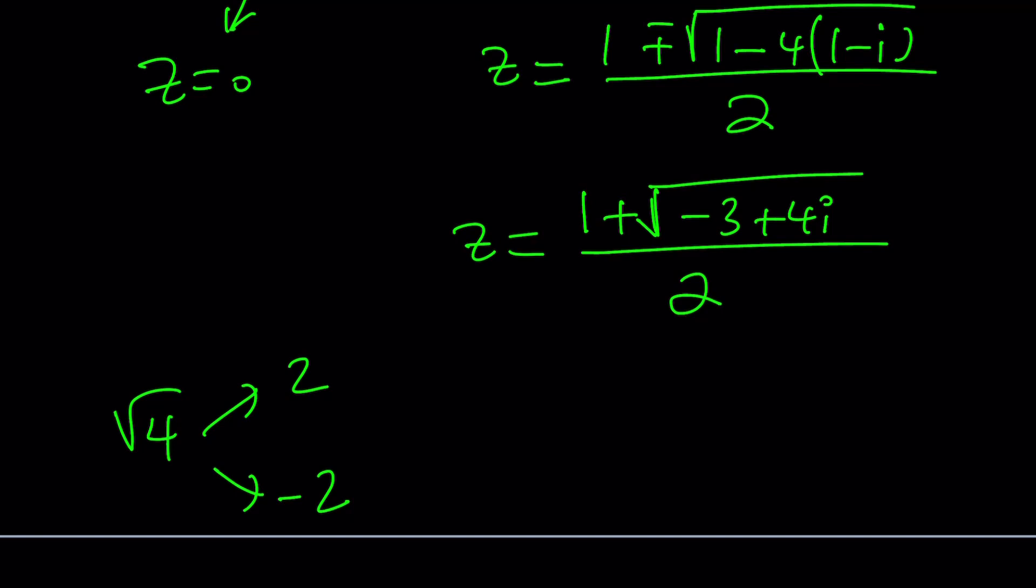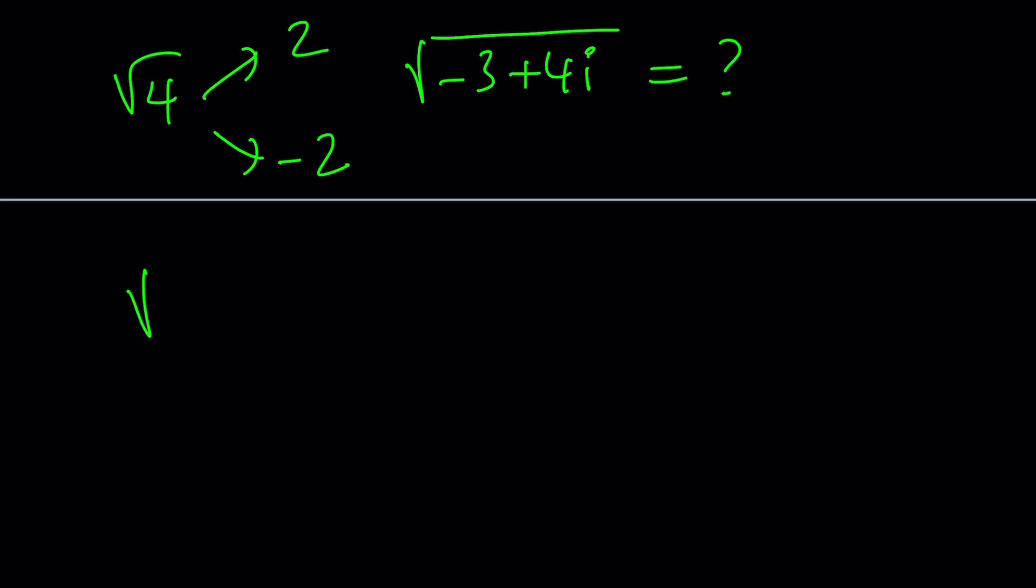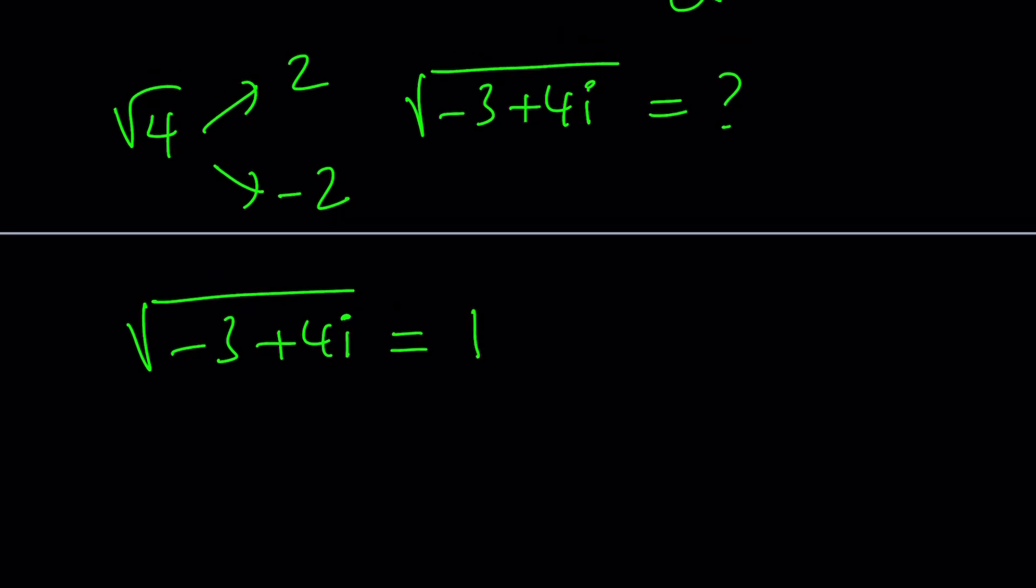Now, think about it. In a complex world, 4 has two square roots, 2 and negative 2. That kind of makes sense, right? Because if you square each of these numbers, you get 4. So that's what it is. And the same thing works for any complex number. So how am I going to find the square root of negative 4? I mean negative 3 plus 4i. That's going to be the million dollar question, right?